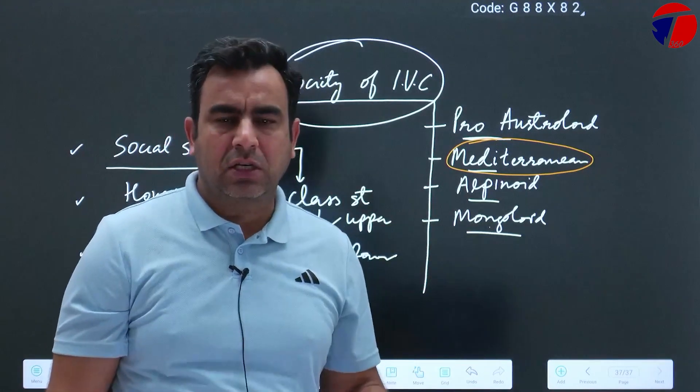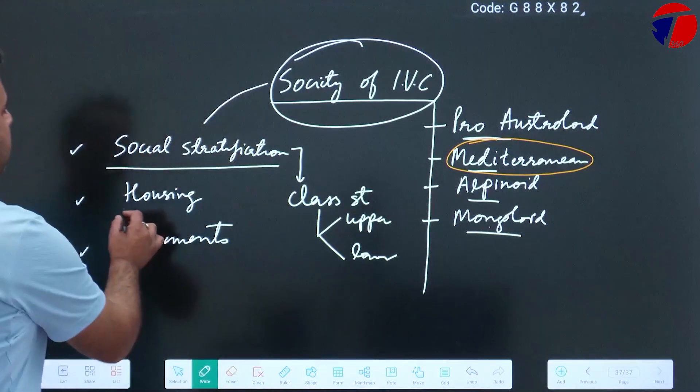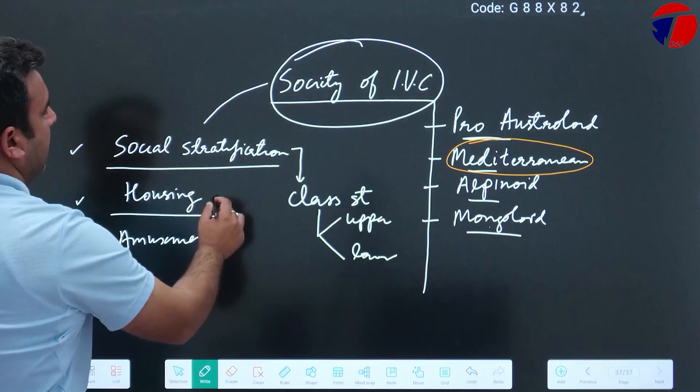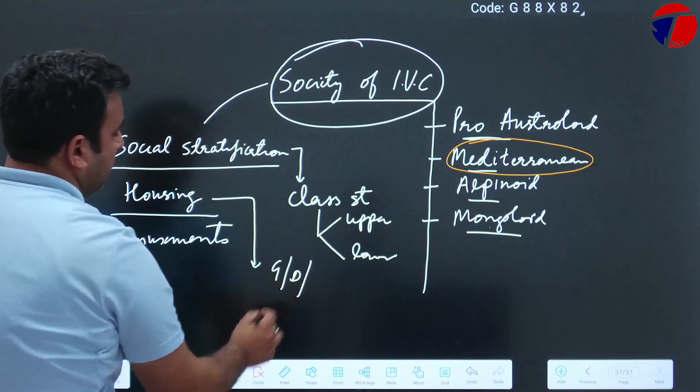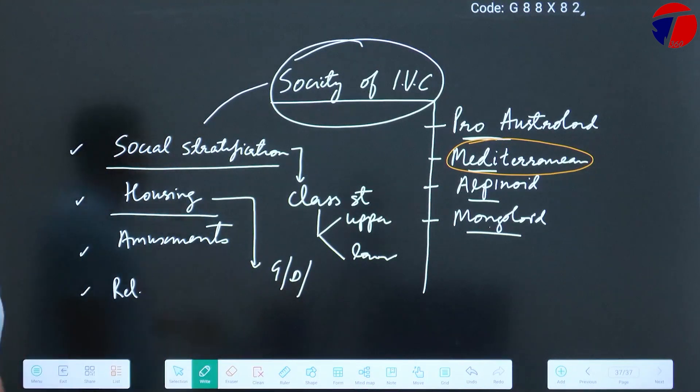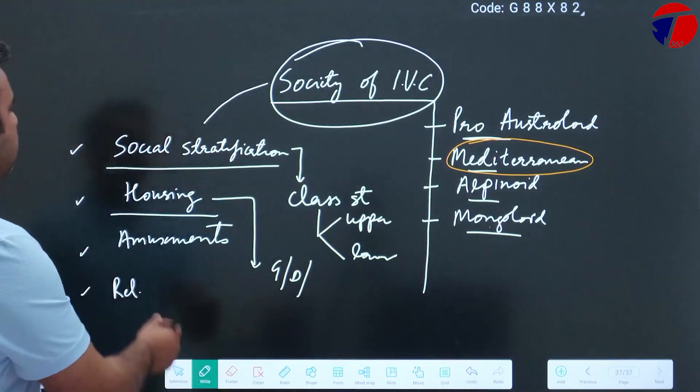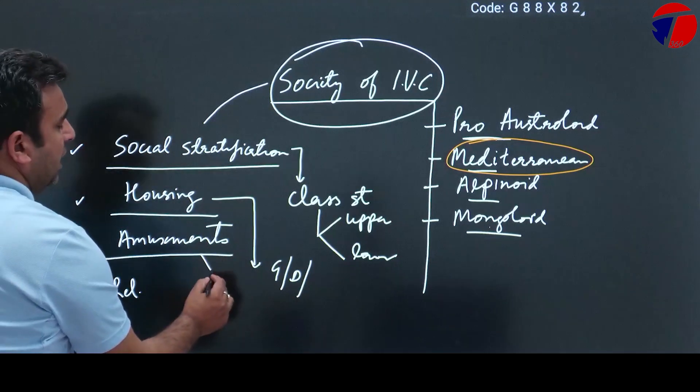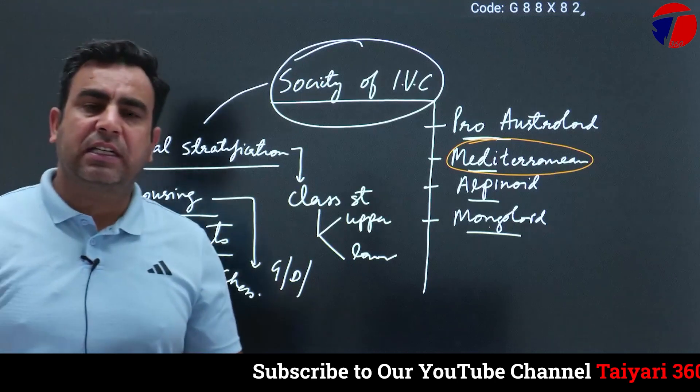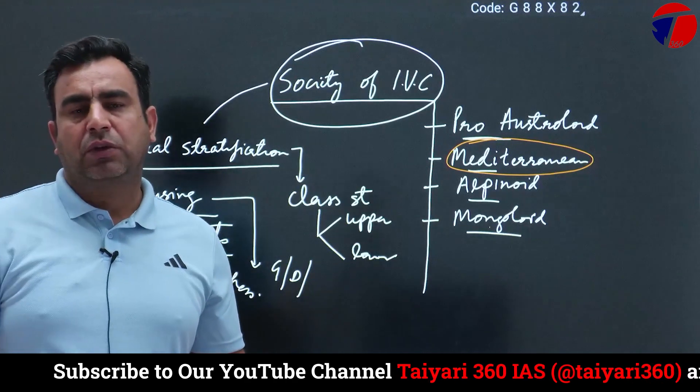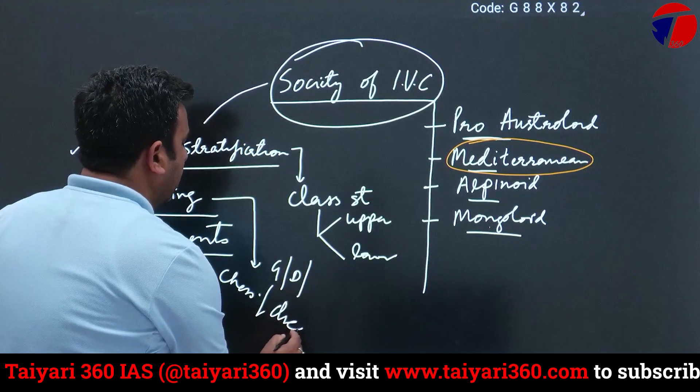Housing pattern of IVC is also part of society. The housing pattern was grid pattern with drainage system and proper planning - the most important feature of IVC. For amusement, bullfighting was there. Some scholars say chess system was there. Some scholars say dice play was an important source of amusement.